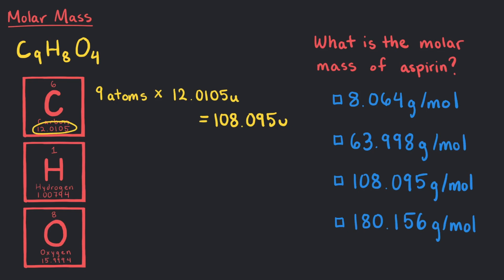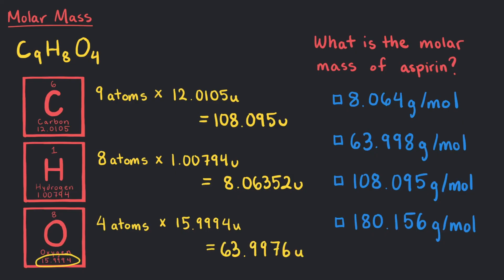Each hydrogen atom weighs 1.00794U. So 8 atoms times 1.00794U equals 8.06352U. And finally, the 4 oxygen atoms times the atomic weight for each atom, 15.9994U equals 63.9976U. We add all the weights together and get a final answer of 180.156U.